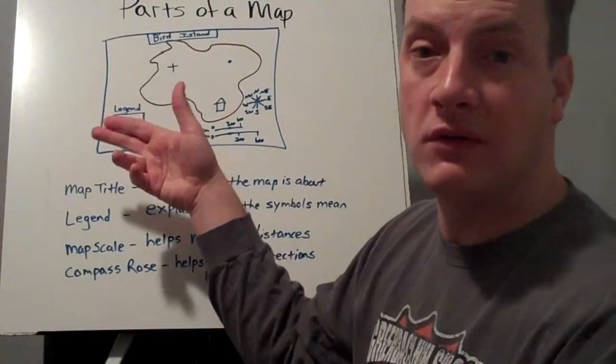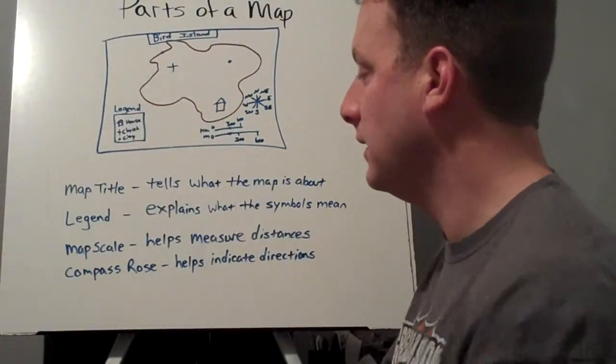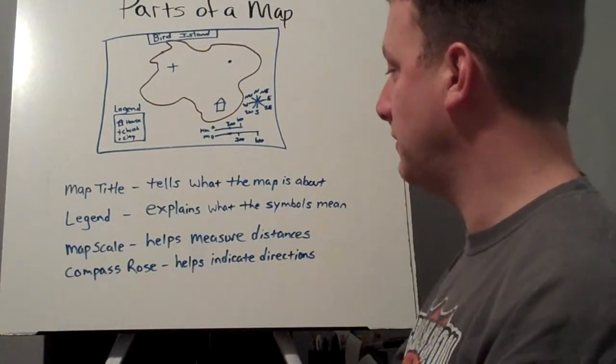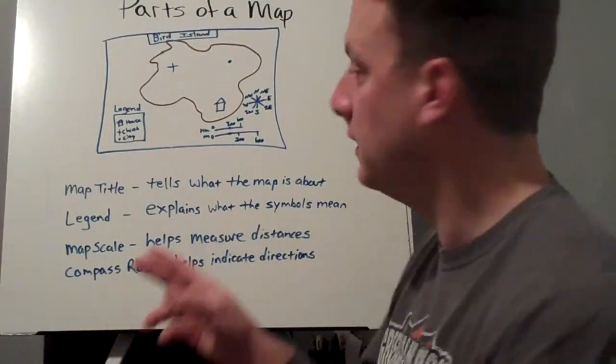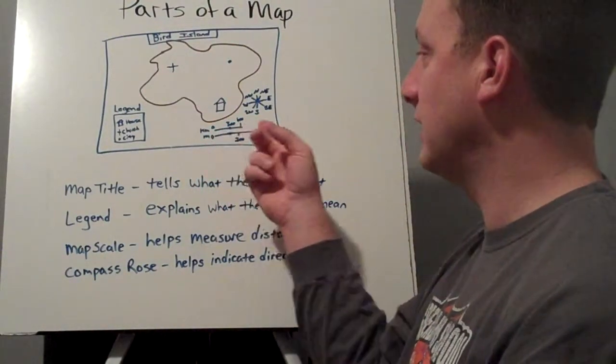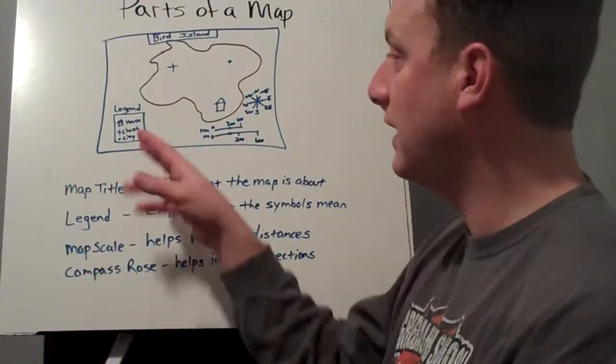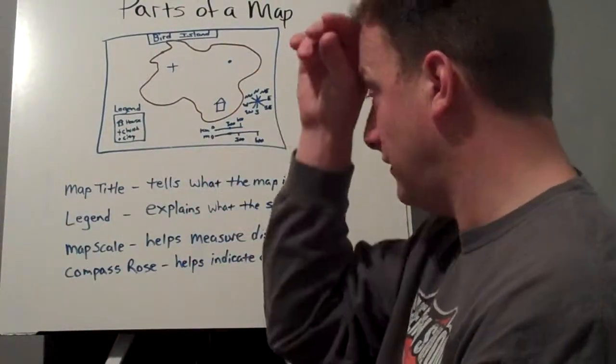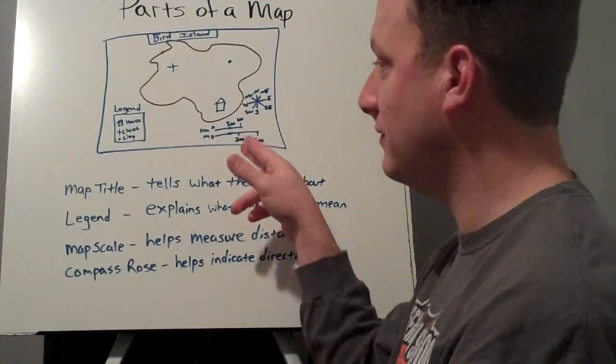Now maps can have different symbols, but you always look into the legend to figure out what a symbol means. Okay, maps are also going to have a scale. The scale helps us to measure distances. Now we have km and m. Here's our map scale. These are usually identified on the bottom part of your map. It helps you to measure out distance.